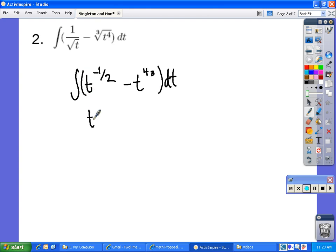We integrate and we end up with t to the 1 half or positive 1 half because we added 1 over 1 half. And we subtract t to the 7 thirds because we add 1 here over 7 thirds plus c.